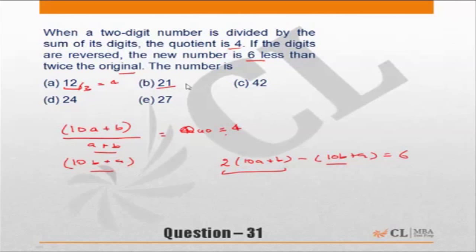21 divided by 3, quotient is 7. Choice B is incorrect. 42 divided by 6, 4 plus 2 is 6, gives me 7. C is incorrect. 24 divided by 4 plus 2, 6, quotient is equal to 4. Can be the answer. 7 plus 2 is 9, 27 divided by 9, quotient 3. Incorrect. So my answer can either be choice A or D.